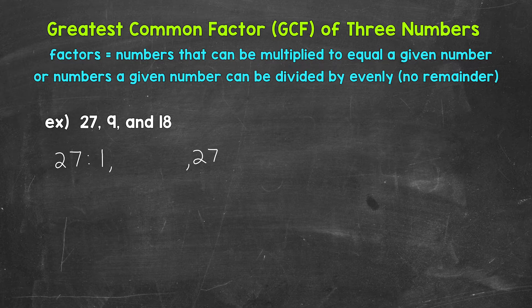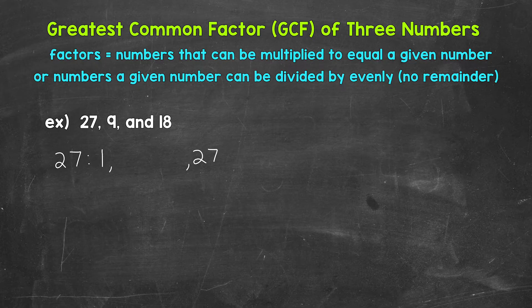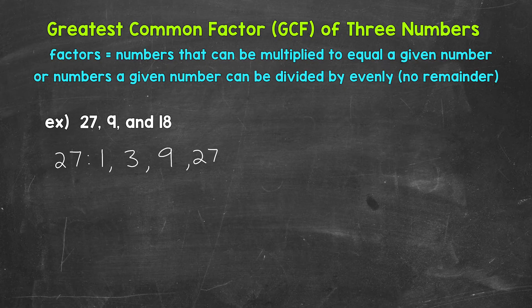Think about multiplication facts, division facts, and we can work our way up from 1. So there are different strategies and ways to work through this. The next factors of 27 are 3 and 9. 3 times 9 equals 27. So 3 and 9 are factors of 27. And that's actually it for the factors of 27.